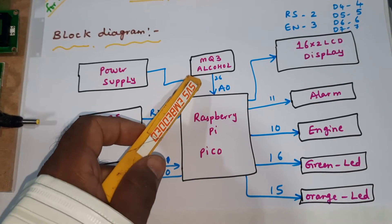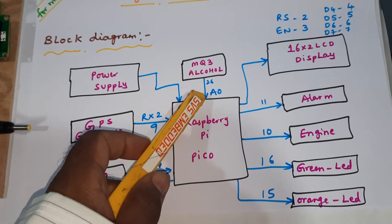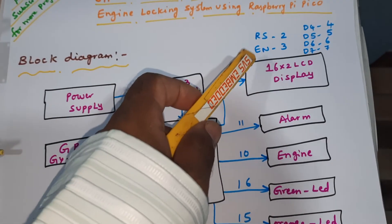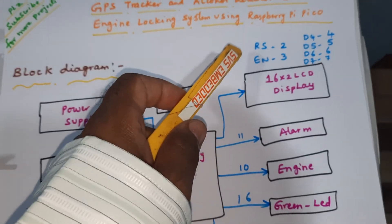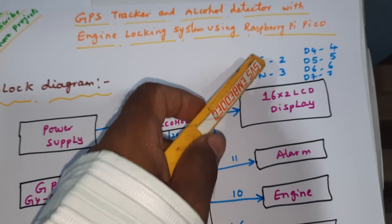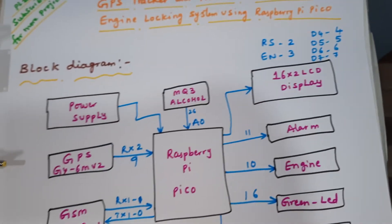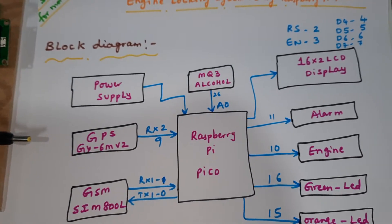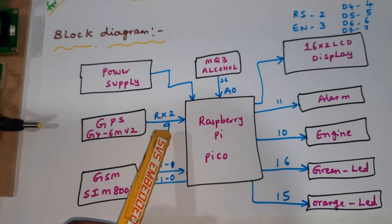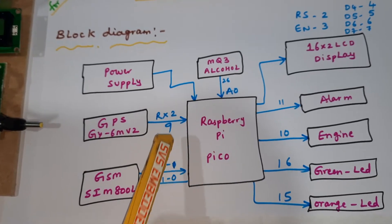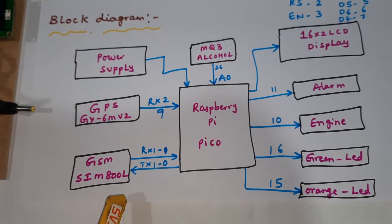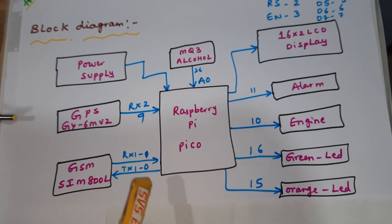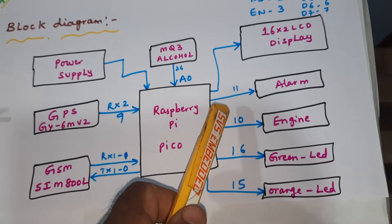We are using an MQ3 alcohol sensor connected to analog pin A0, a 16x2 LCD display connected with RS, Enable, D4, D5, D6, D7 on GPIO pins 2, 3, 4, 5, 6, 7. We are also using a GPS GY6MV2 module connected with Serial 2, and a GSM SIM800L connected with Serial 1 — RX and TX on GPIO 1 and 0. The alarm is connected to pin 11.